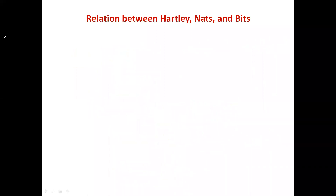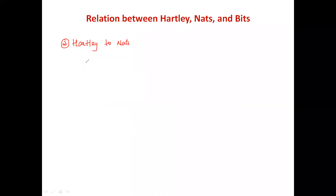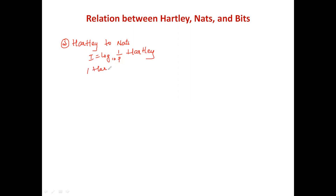Next, let us convert hartley to nats. Once again, I = log(1/p). Taking 1 hartley to the denominator gives I divided by log(1/p) to base 10. To convert to nats, I substitute I = log(1/p) to base e, giving log(1/p) to base e divided by log(1/p) to base 10.